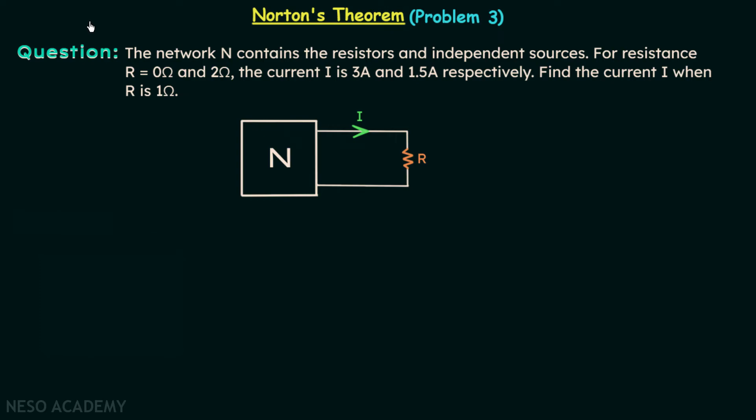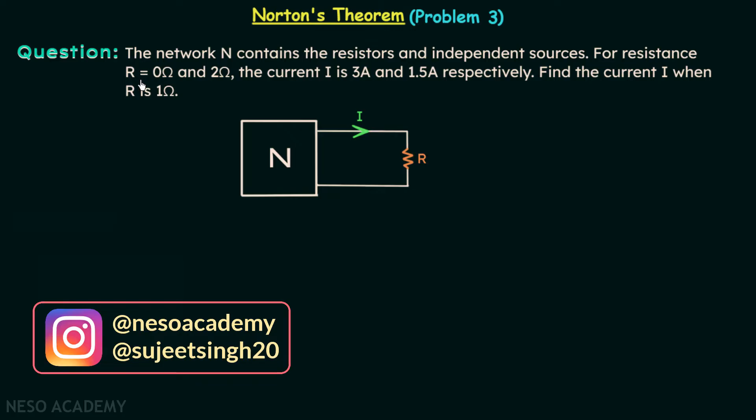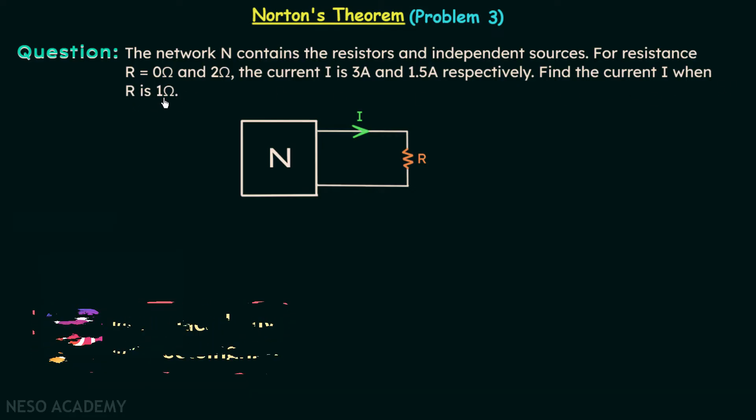In this lecture we are going to solve problem number 3 on Norton's theorem. Let us read the given problem. The network N contains resistors and independent sources. For resistance R equal to 0 ohms and 2 ohms, the current I is 3 amperes and 1.5 amperes respectively. We need to find the current I when R is equal to 1 ohm.